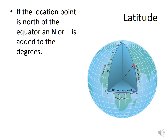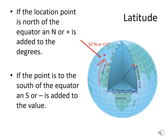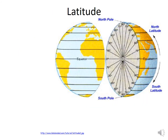If a location point is north of the equator, an N or positive sign is added to the degrees — for example, 52 degrees North, or positive 52 degrees, meaning it's above the equator. If the point is south of the equator, an S or negative sign is added — such as 24 degrees South, or negative 24 degrees — because it is below the equator.